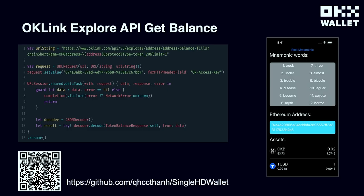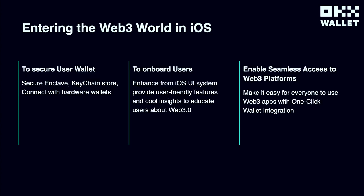We decode the JSON response and bind it to the UI. That completes the demo — we already have the mnemonic, the Ethereum address, and the asset balance for this address. This is my GitHub link if you're curious about how this simple Web3 wallet was built — you can check it out there.